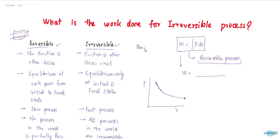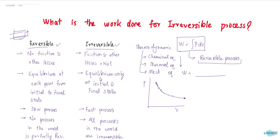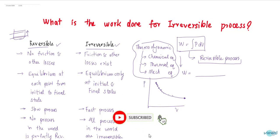What is equilibrium? Thermodynamic equilibrium means a system should be in chemical equilibrium, in thermal equilibrium, and in mechanical equilibrium. So in a reversible process, at every point from initial to final state, the system is in equilibrium. But in an irreversible process, only at the initial and final points is the system in equilibrium.